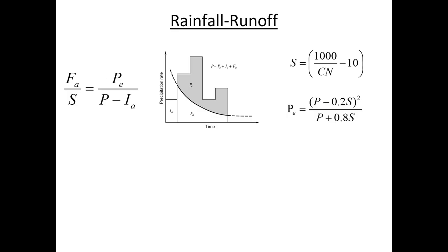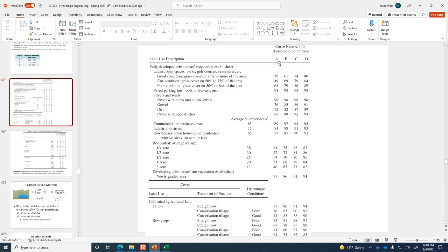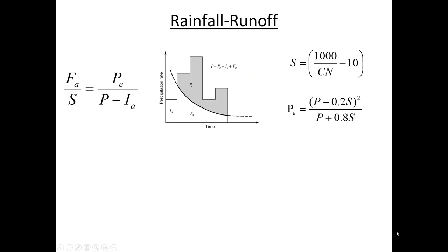As a refresher, the NRCS model is a way of figuring out what the rainfall excess depth is, and it depends on us characterizing the curve number for a watershed. The curve number comes from a table — the tables I showed you last time are typical curve numbers. For example, you can look up what curve number corresponds to one-acre residential lots for a given soil type. These curve numbers are for middle-of-the-road moisture conditions. Today we'll talk about how to account for unique circumstances that may change the curve number we put into the NRCS method.